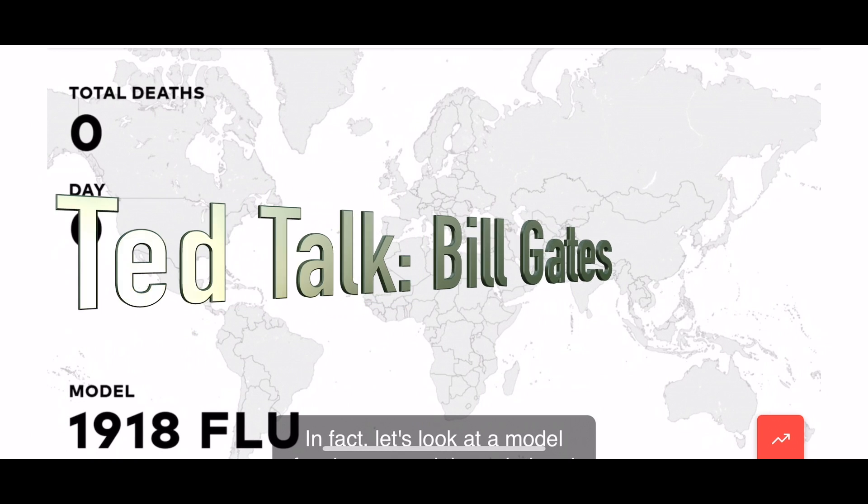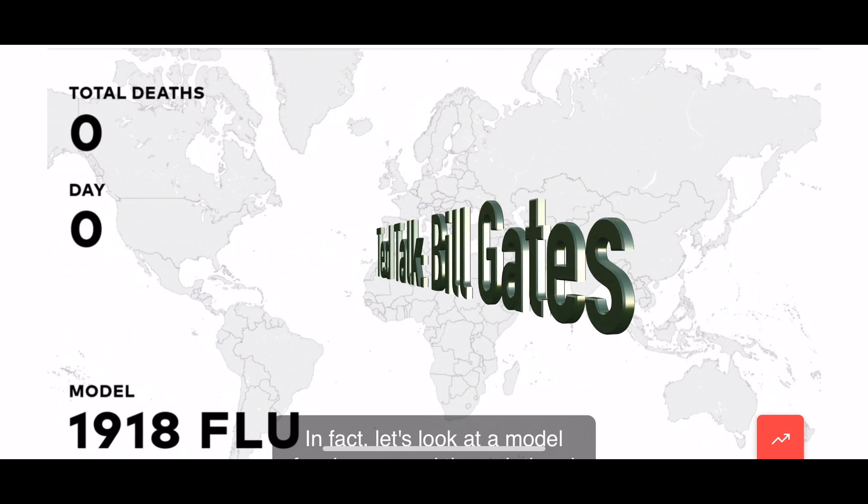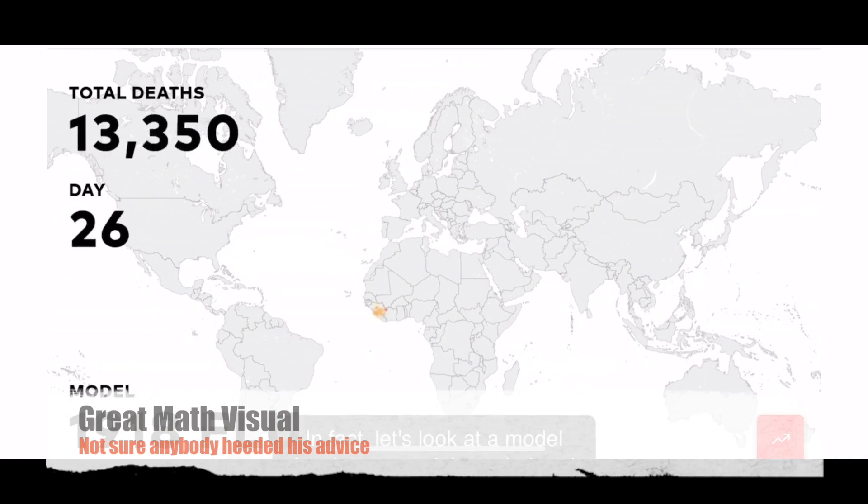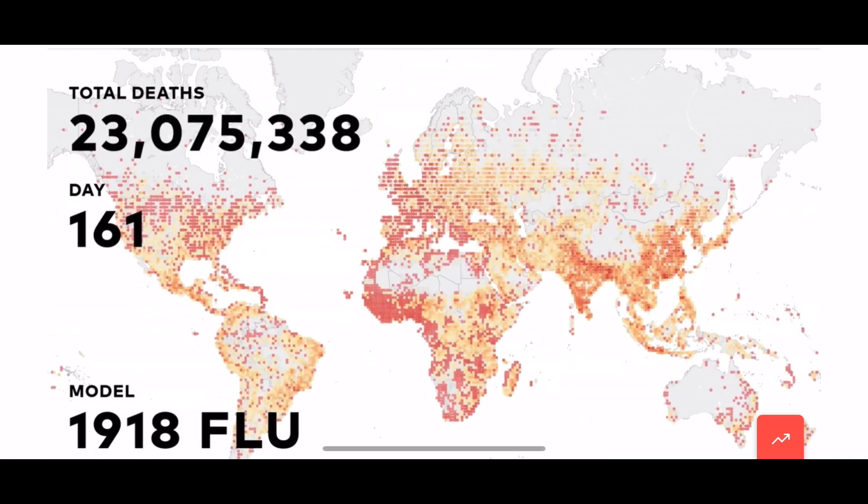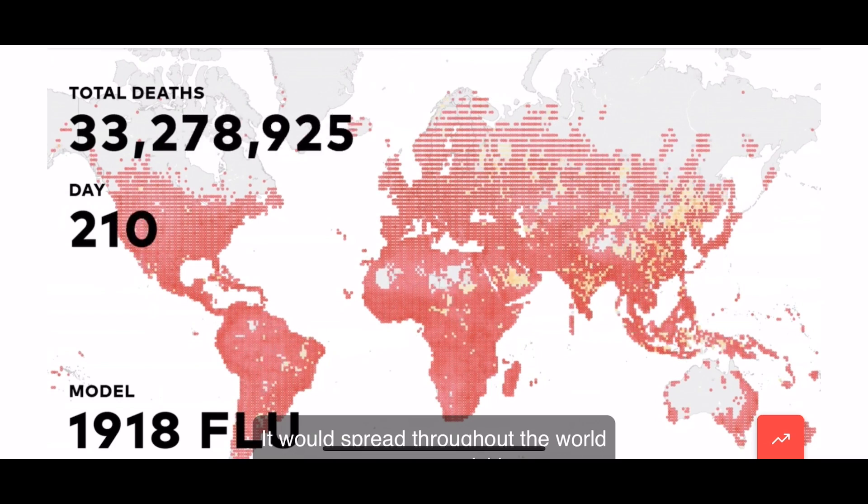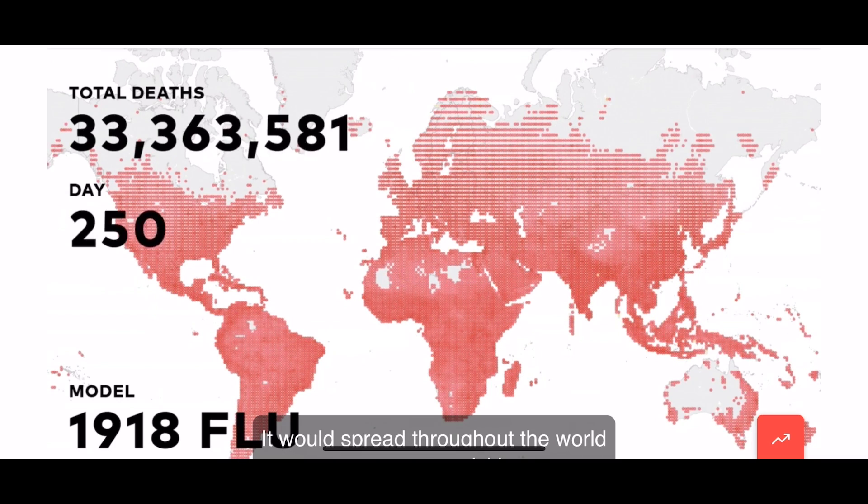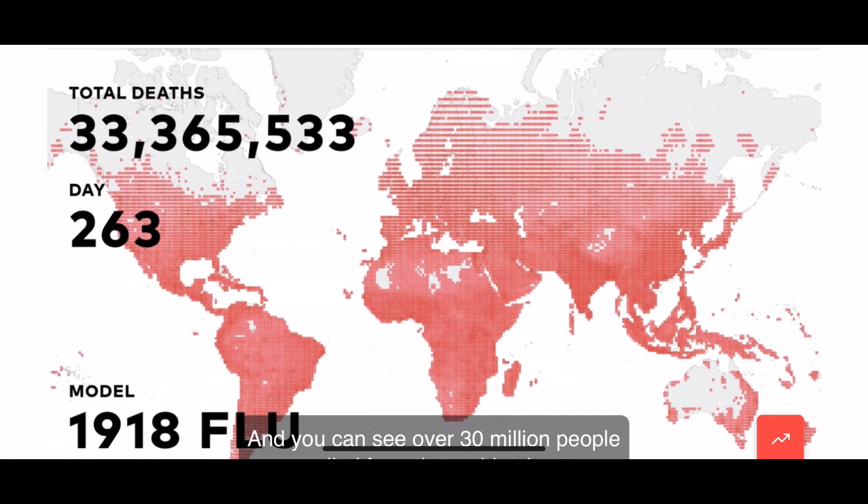Years ago, Bill Gates gave a talk at a TED Talk about it. Here it is. The virus would spread through the air like the Spanish flu back in 1918. So here's what would happen. It would spread throughout the world very, very quickly. And you can see there's over 30 million people die from that epidemic.